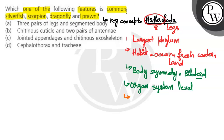Arthropoda is triploblastic, meaning there are three germ layers: ectoderm, endoderm, and mesoderm. The coelom is a true coelom, meaning the body cavity is lined by the gut wall.